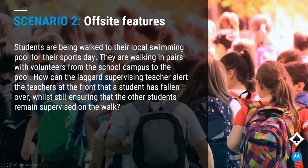Scenario two is off-site. Because this is a license-free radio, we can actually take it off-site and use it anywhere — opposed to a licensed radio, which is generally licensed for a particular area. So this is a great opportunity for off-site use. For example, students being walked to the local swimming pool for sports day, walking in pairs with volunteers and teachers at the front or end of the queue. If someone is lagging behind or has fallen over, how do you get that communication through to other staff members along that line?